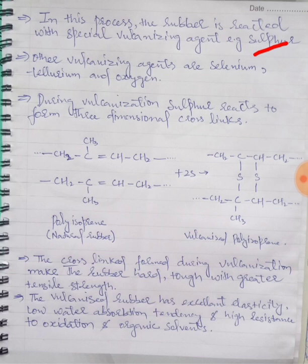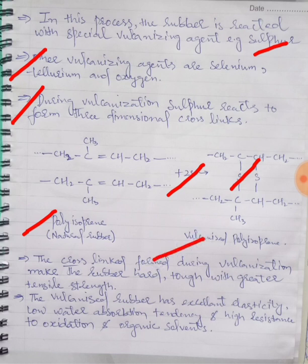During vulcanization, sulfur reacts to form three-dimensional crosslinks. For example, we have natural rubber which is polyisoprene. We react it with vulcanizing agent, for example sulfur. So sulfur forms three-dimensional crosslinks with isoprene, and we obtain vulcanized polyisoprene.